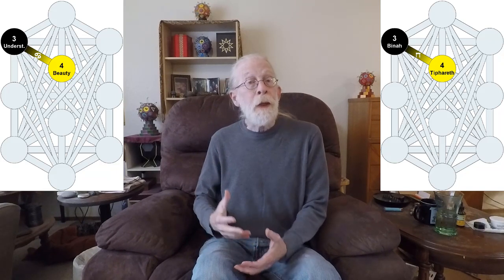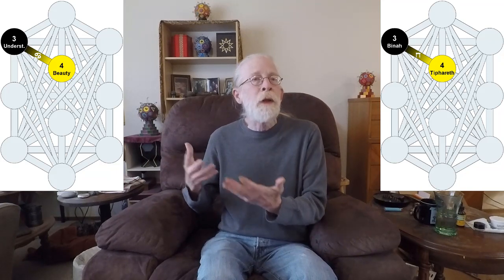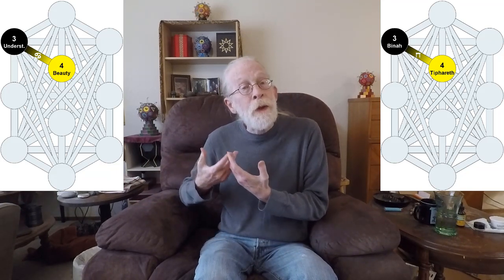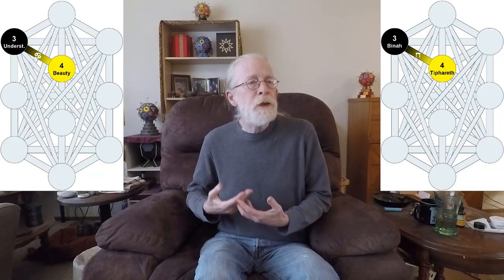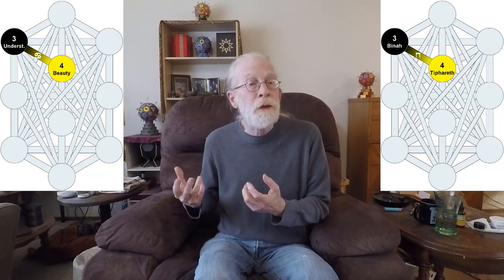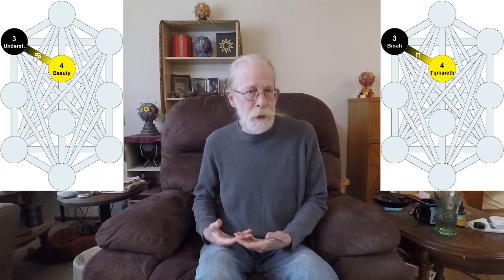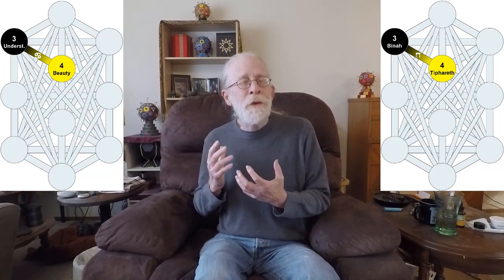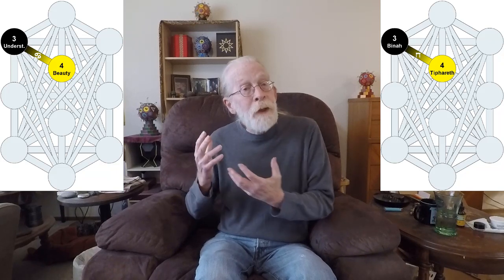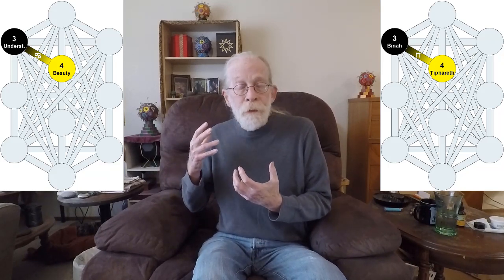Everything below Bina is the realm of sequence — the temporal realm, the realm of manifestation — all heading towards that finite, infinitely finite present moment of Malkuth. This is the descent of Heth. Heth is also the Akasha: that phase of self-realization where things become sequentialized, where things transit from an undifferentiated state to a differentiated state. That passage we call the Akasha.